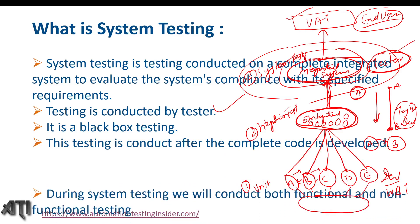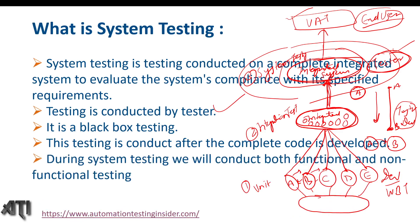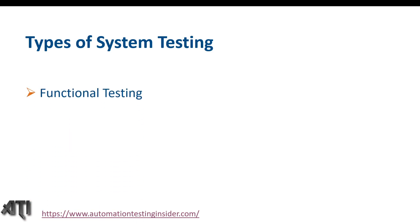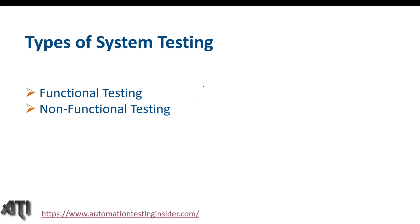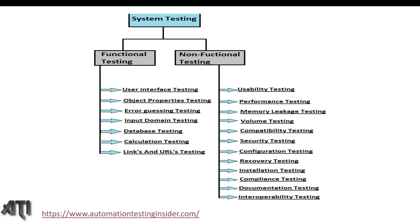This testing is conducted after the complete code is developed. During system testing we conduct both functional and non-functional testing. The different types of system testing include functional testing and non-functional testing — these are the different testing types we perform as part of system testing.